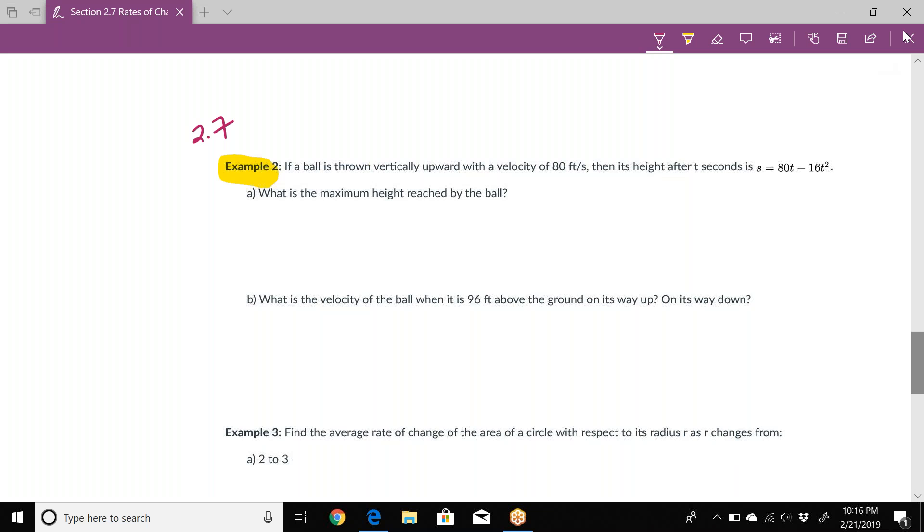If a ball is thrown vertically upward with a velocity of 80 feet per second, then its height after t seconds is given by the position function S = 80t - 16t².